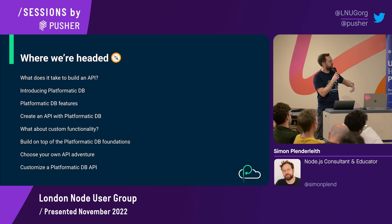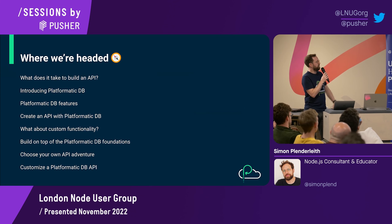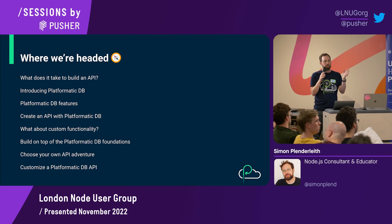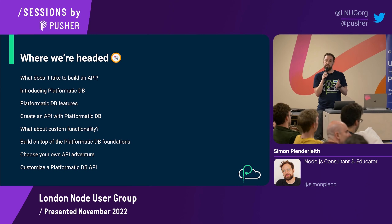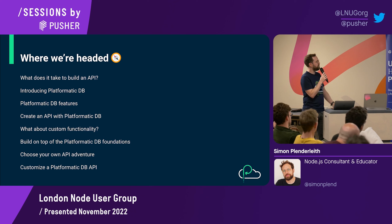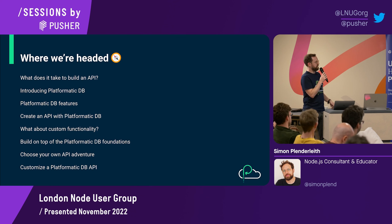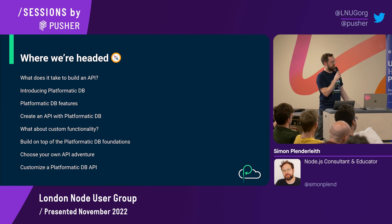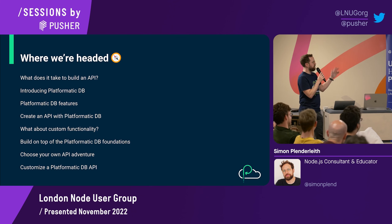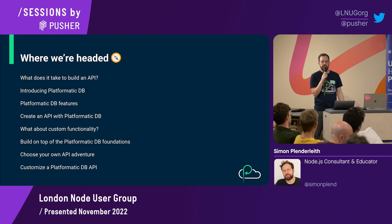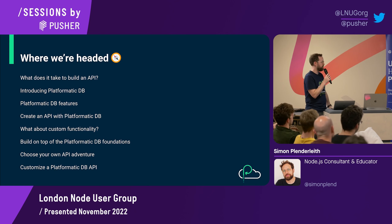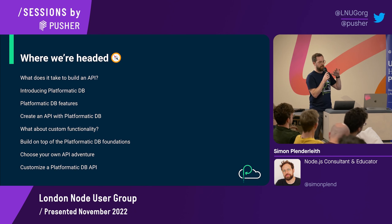In the next 20 minutes or so, we're going to be looking at what it takes to build an API. Probably a lot of you have experienced building APIs or working with APIs. Then we're going to look at PlatformaticDB, one of the tools we've released recently — its features, how we can create an API with it. There'll be a bit of live coding. And then we're going to look at how we can customize this, and then the foundations PlatformaticDB is built on.